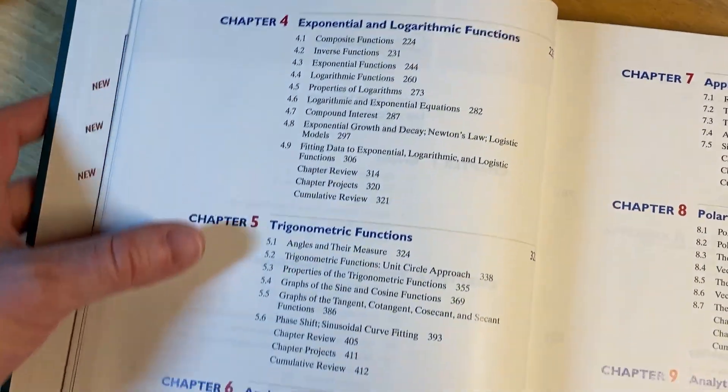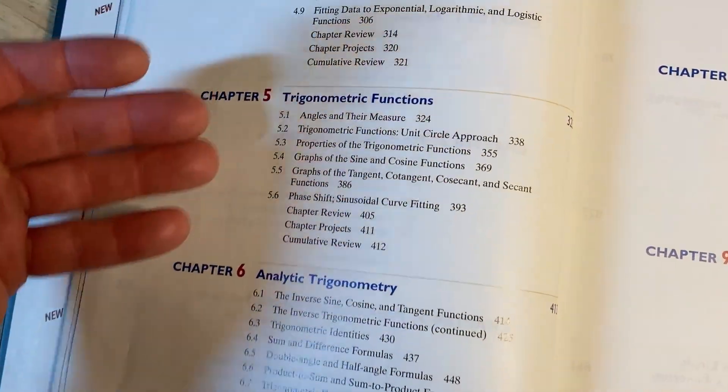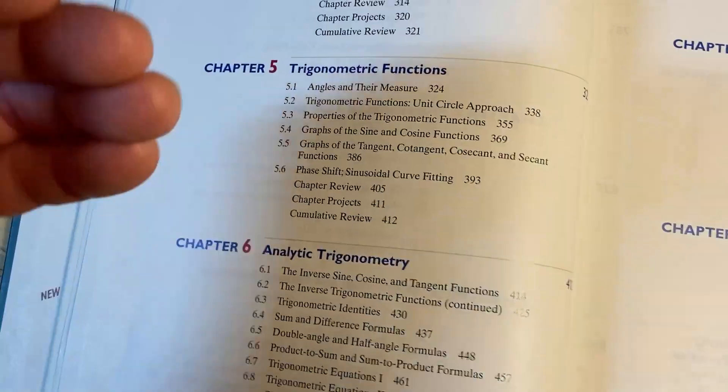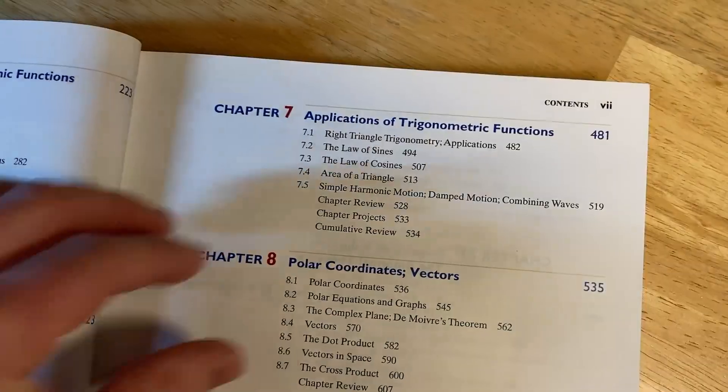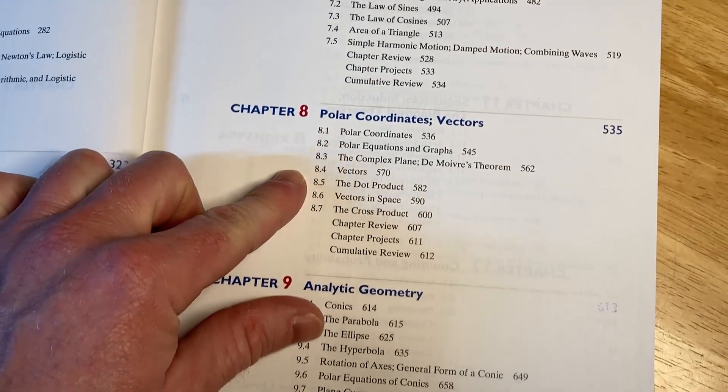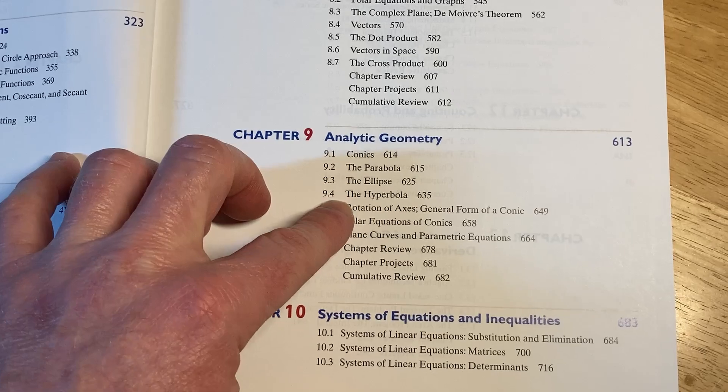Exponential and logarithmic functions. Then trig functions. So if you were taking a trig course, you would basically start here in chapter five. So you can, in theory, start from here and then work your way through. Analytic trigonometry, applications of trigonometry, some polar coordinates, hyperbolas and stuff like that, ellipses.